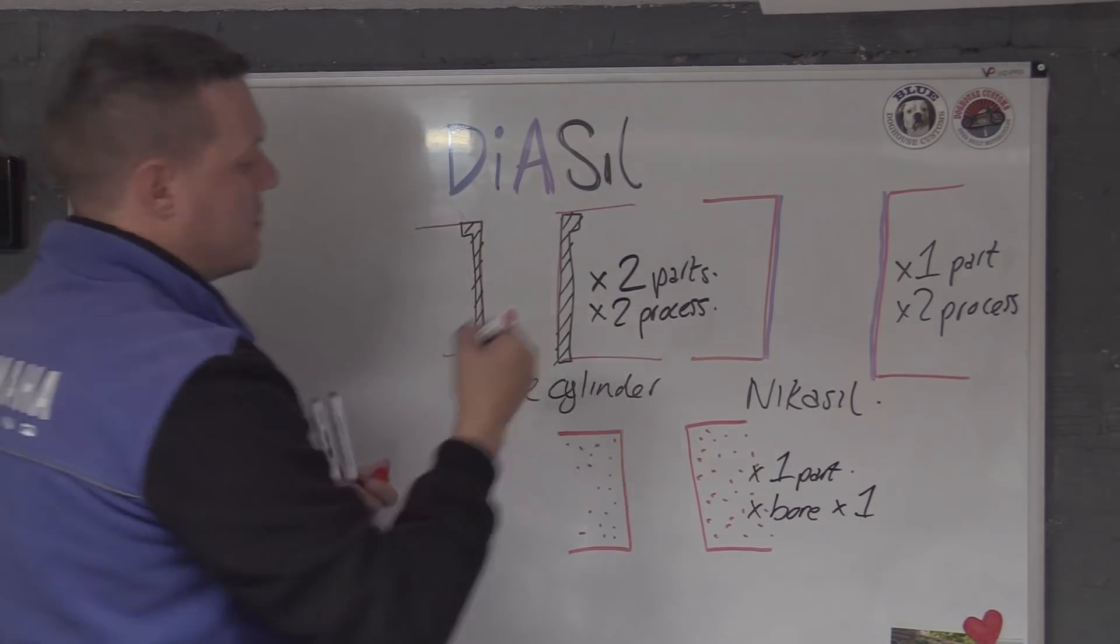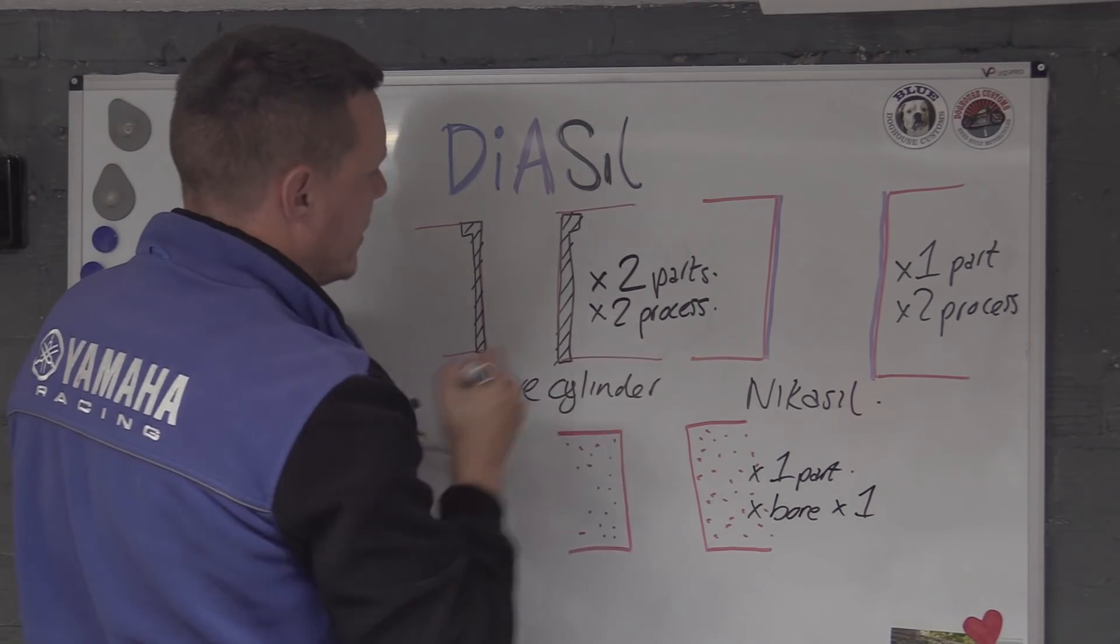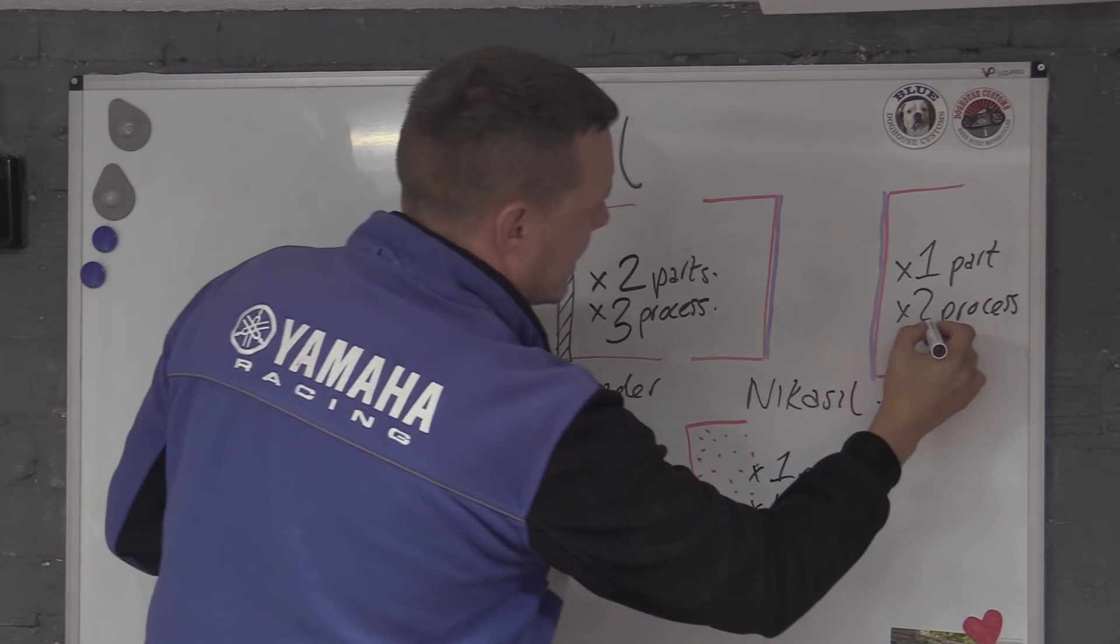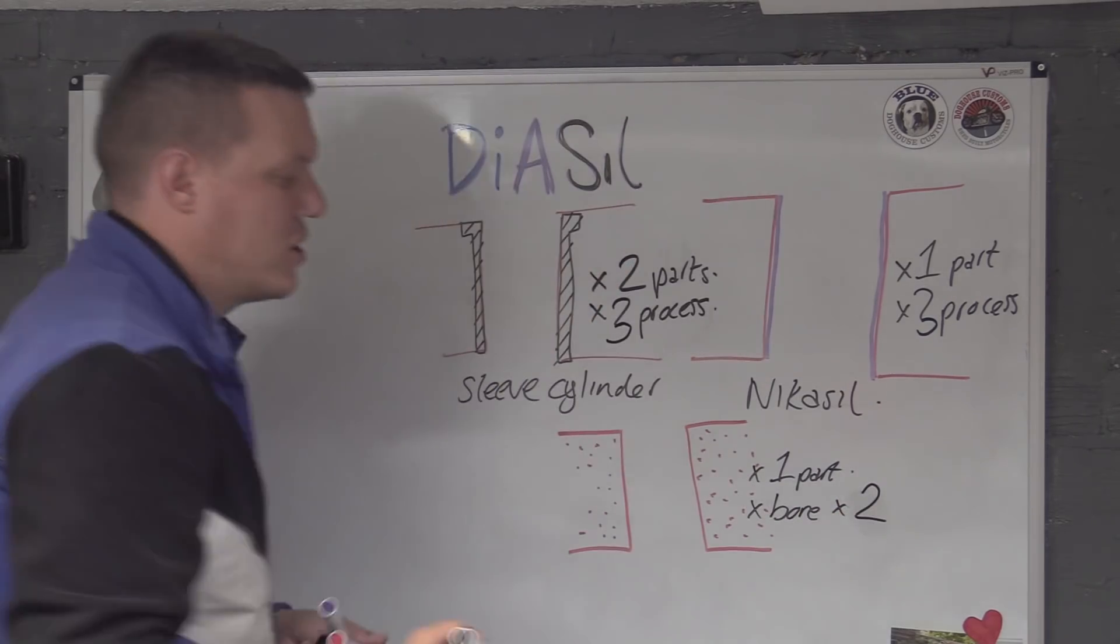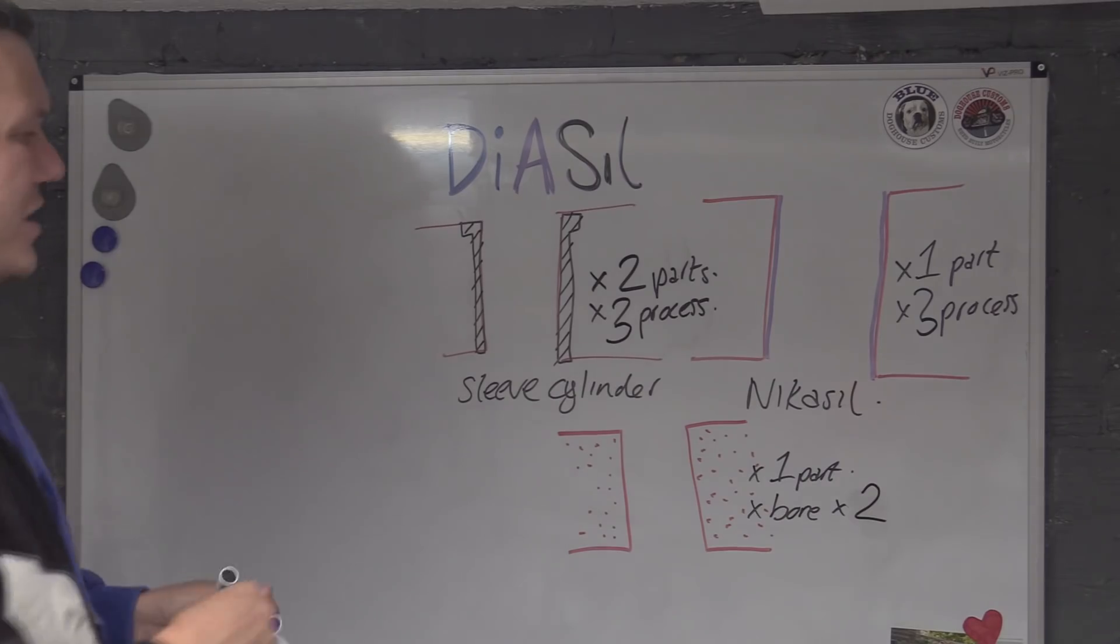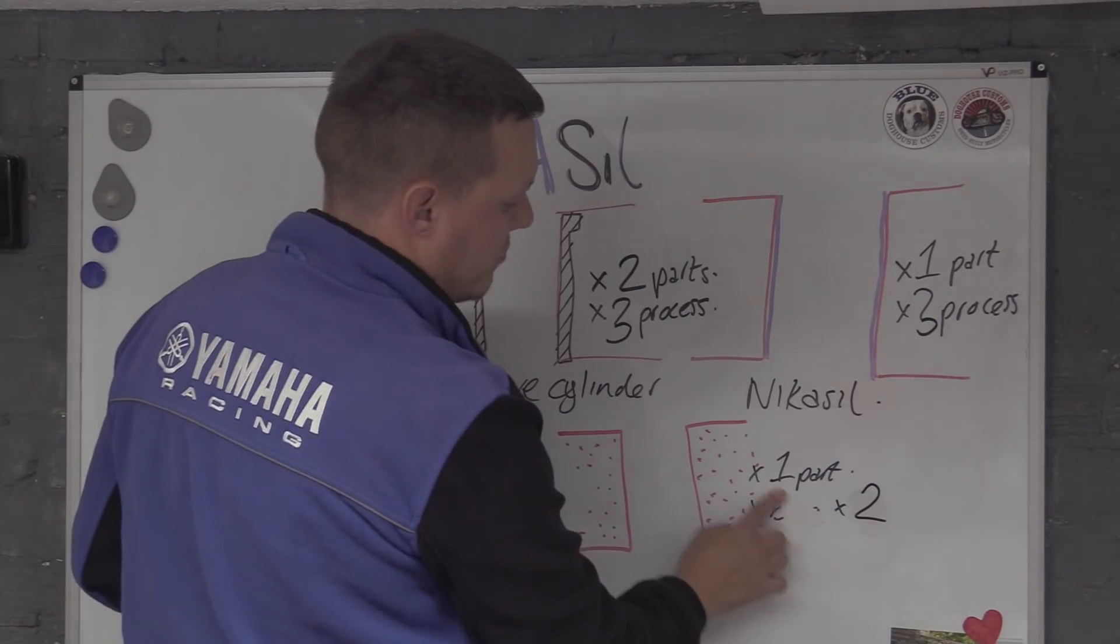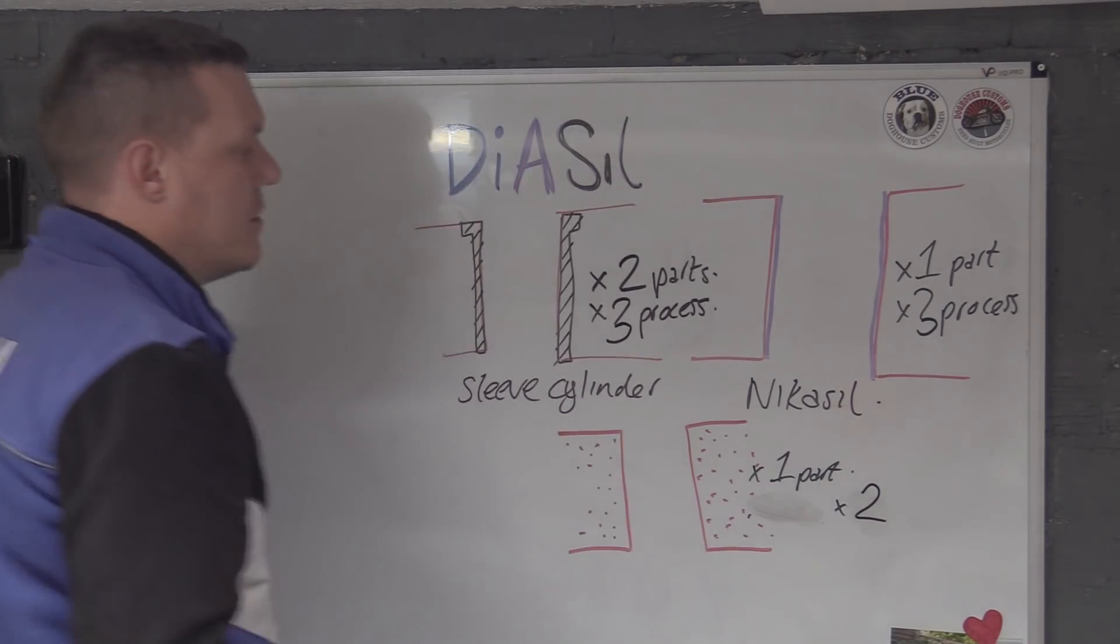It's times one. So you can see how this is cheaper. Obviously you've got to cast them all, so let's add that process in. There's three here, you've got to cast it, and then machine it. You can see how this is a lot cheaper.